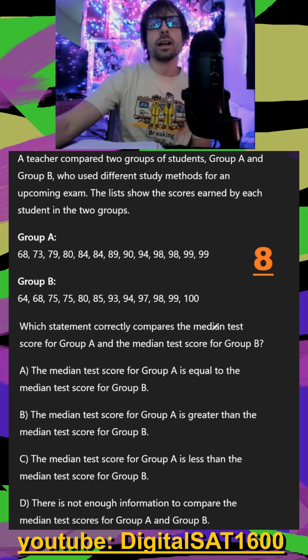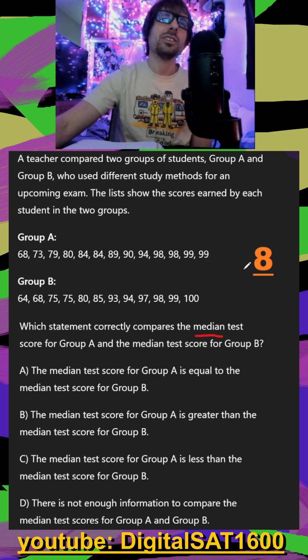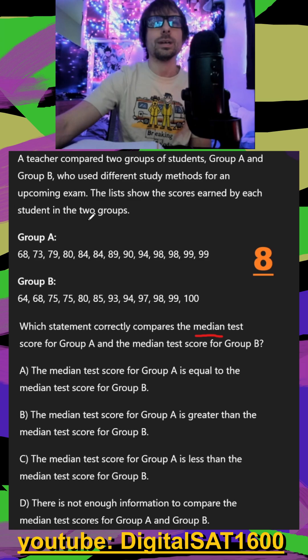Which statement correctly compares the median test score for group A and the one from group B? So with medians, I feel like usually they give you the total number of values here, but we can count it up pretty quickly.